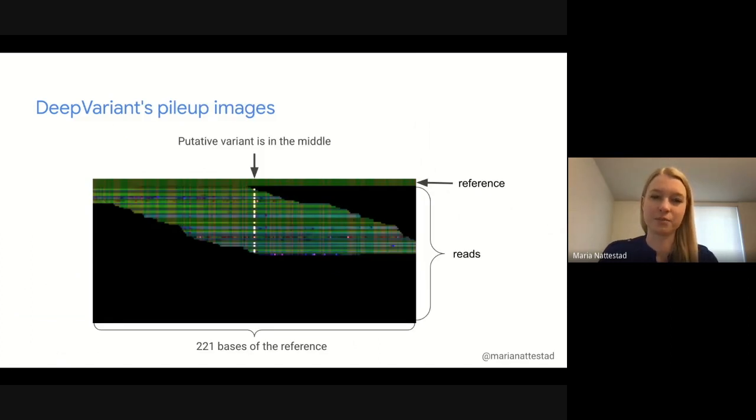DeepVariant's pileup images look something like this. We basically walk along the chromosomes, and for each variant that we find, we create an image where the putative variant is in the middle, and we show 221 bases of the reference, including that one middle base. Within that window, we see the reference at the top and then we pile up the reads at the bottom, and this is very similar to something you'd see in any other genome browser.